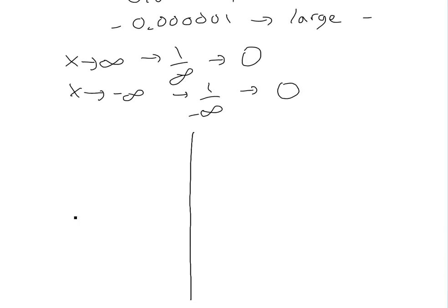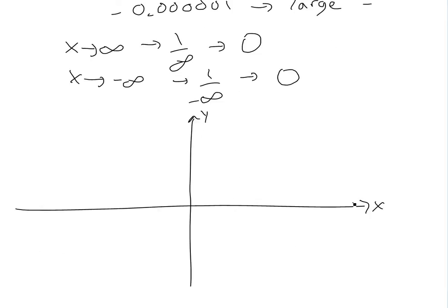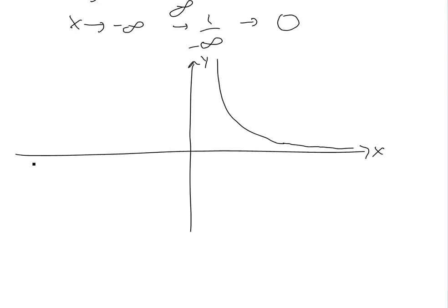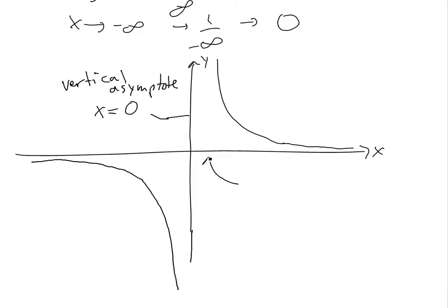If you were to draw this — y and x axes — at positive infinity we're going to 0, and at 0 from the right side we get a large positive value, and from the left side we're approaching from the left. So you have something like this, and the asymptotes here: x equals 0 is the vertical asymptote, and y equals 0 is the horizontal asymptote, as the function approaches 0.